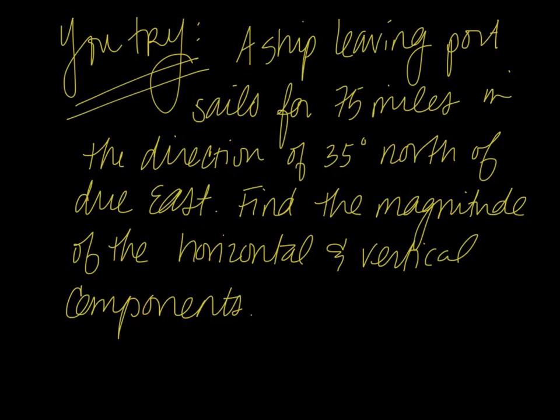So I now would like you to try this example. A ship leaving port sails for 75 miles in the direction of 35 degrees north of due east. That's the same direction as the example before. Find the magnitude of the horizontal and vertical components. So same idea we just did, but I would like you to try that on your own, and I will check those at the beginning of class tomorrow.